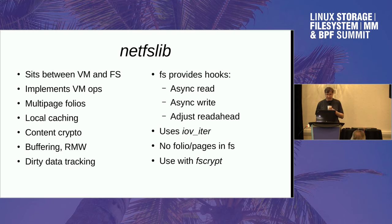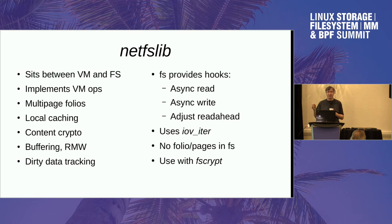So what does it require from the network file system? We basically get rid of all knowledge of folios and pages in the network file system. It only has to provide two main things - two hooks: one to do an asynchronous read, and one to do an asynchronous write. We drive these by giving them an IOV iterator that describes the pages, which may be in BVEC format, in an array, or maybe in the page cache.